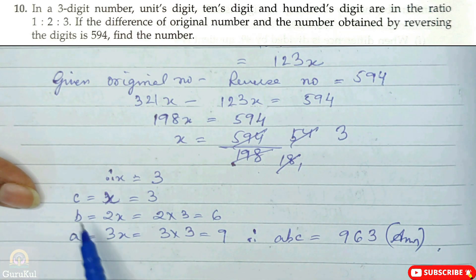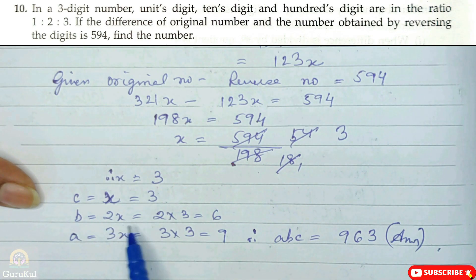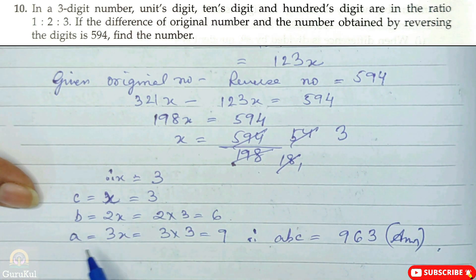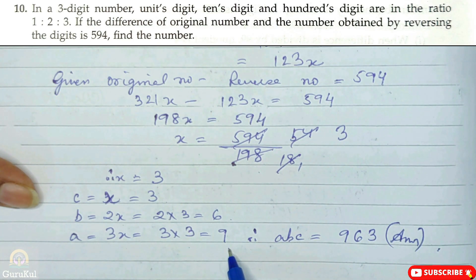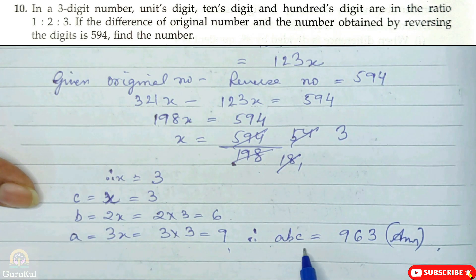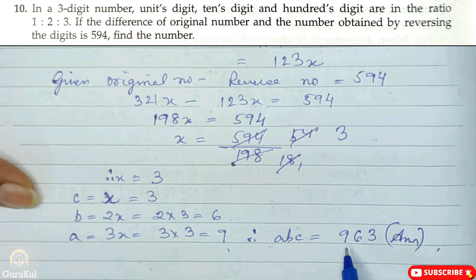Substituting X = 3: C = X = 3, B = 2X = 2×3 = 6, A = 3X = 3×3 = 9. Writing the digits in order A, B, C: the three-digit number is 963.